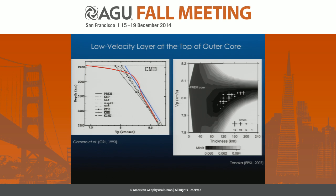This was picked up by Tanaka in 2007 and they actually try to see how you can minimize the mismatch between observations and models to obtain the best fit to the observation through the models. They saw that this would be the case for a layer that's about 140 kilometers thick and that is roughly 1% slower than the bulk average core, which in this case was PREM.